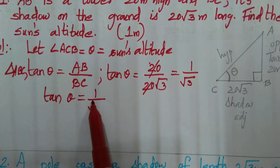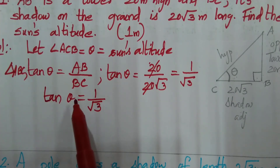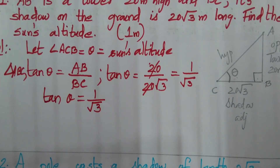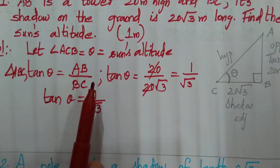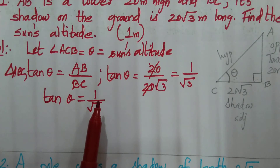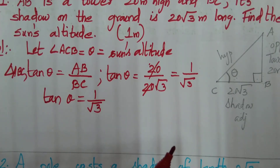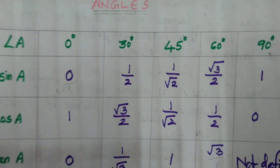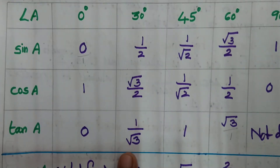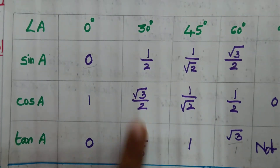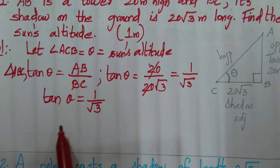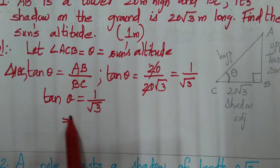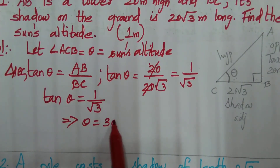So tan theta equals 1 by root 3. This is the theta value. Looking at the table, tan 30° equals 1 by root 3. So theta is equal to 30 degrees.